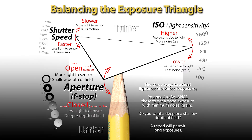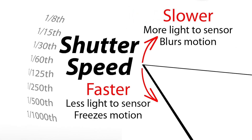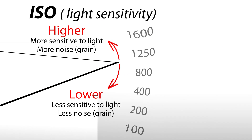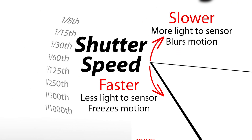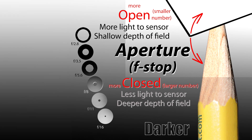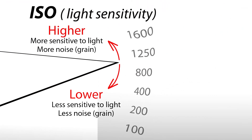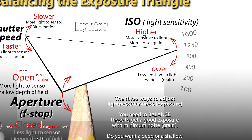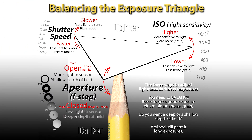On a DSLR camera, the exposure triangle includes shutter speed, your aperture settings, and your ISO. The shutter speed is about how long the camera's shutter is open, and that affects how much light hits your camera's sensor. The aperture is basically how wide open the lens is — you can close it to let less light in or open it up to let more light in. And ISO goes back to when we used film, where different film stocks would get exposed at different rates, so it's one more way to influence how light or dark your image is.